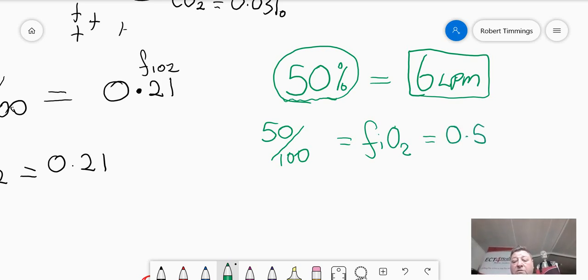So, 0.5 will be the answer to that question. The patient with a Hudson mask, a simple face mask at 6 litres per minute, is getting 50% oxygen or an FiO2 of 0.5.